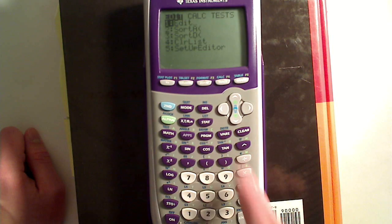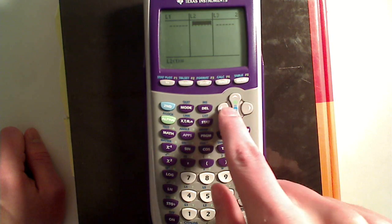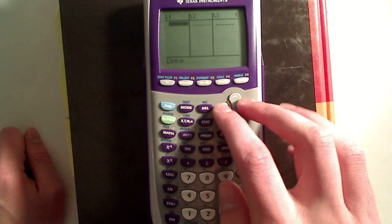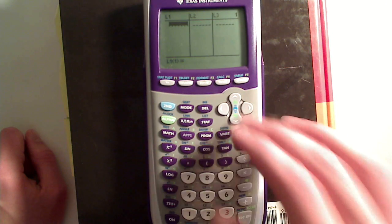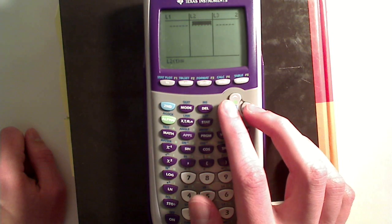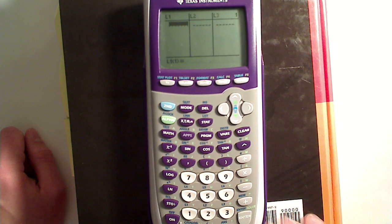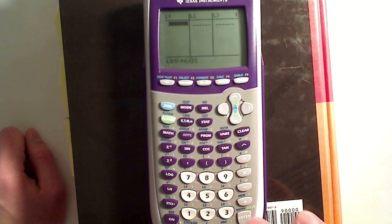So for that we're going to go stat, edit, and we're going to be using these two columns here. L1 is the x value in the equation that we were using, and L2 is the y value. So we know it's at 63 degrees, so temperature is the x value.